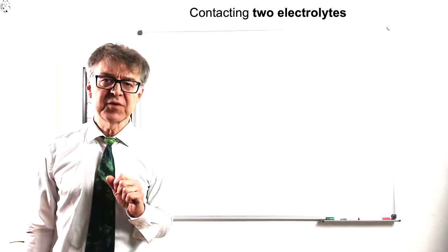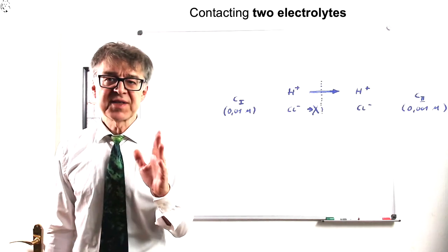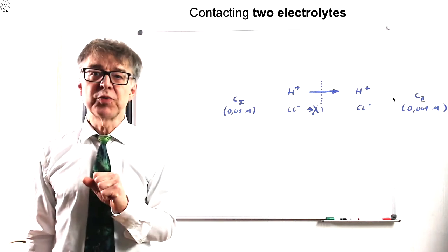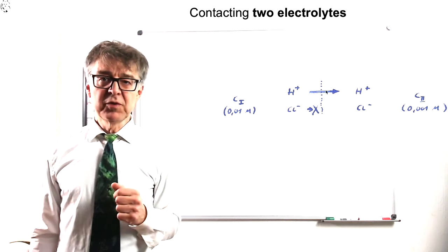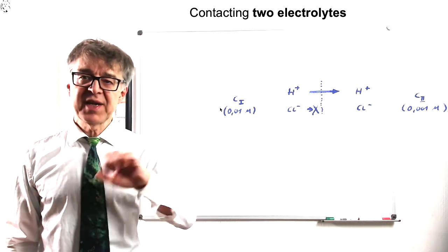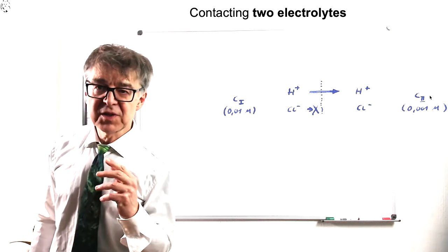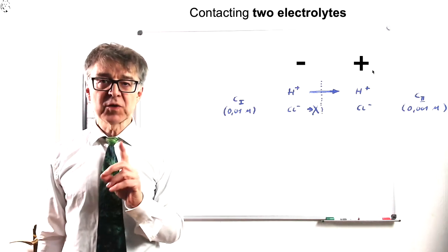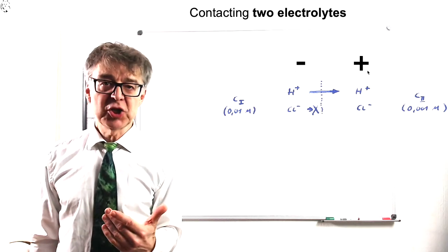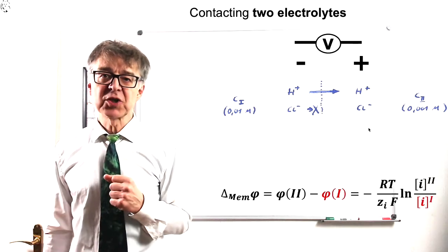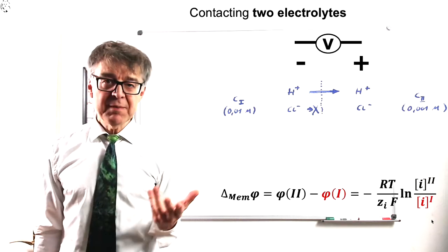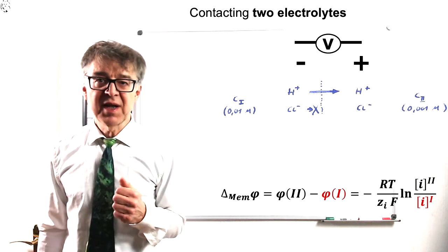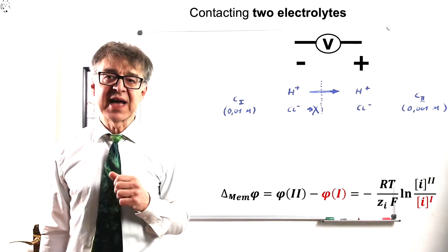Consider two solutions with different pH values that are separated by a membrane. The membrane is permeable to protons. Protons will move from the more concentrated solution through the membrane into the more dilute solution and charge this side positively. We end up with a so-called membrane potential, which can be calculated with an equation similar to the Nernst equation. Membrane potentials are important in biochemistry and in electrochemical analytical devices like glass electrodes.